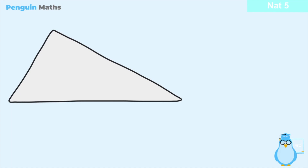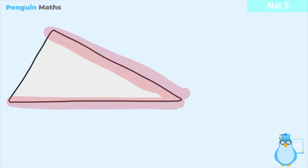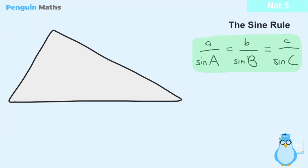But let's say we have a problem where we don't have a right-angle triangle — just a regular triangle without a 90-degree angle — and we want to figure out information about it. For instance, if we know the length of two sides and a known angle, and we'd like to figure out the size of another angle, we can't use trig ratios because they only apply to right-angle triangles. So we need another method, and one such method is the sine rule.